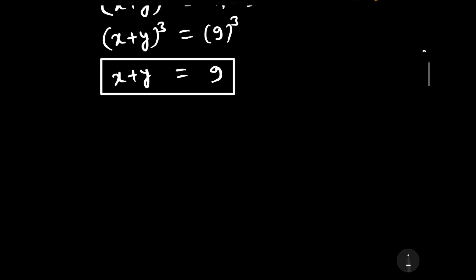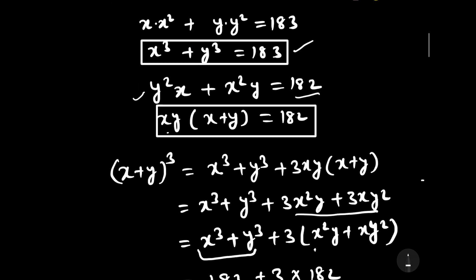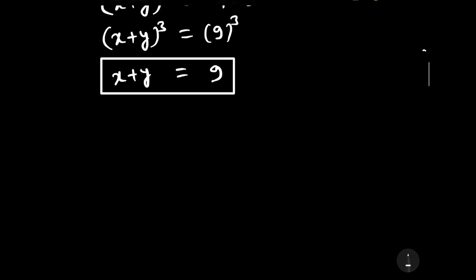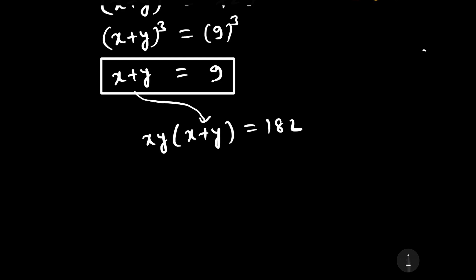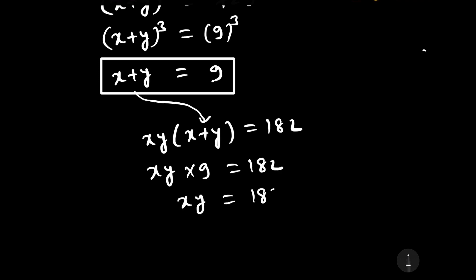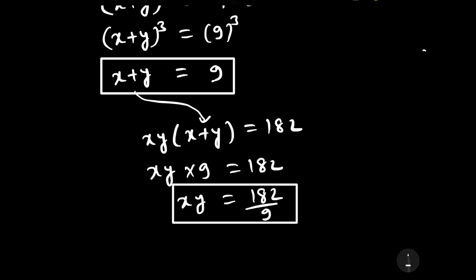From the second transformed equation, xy(x + y) equals 182. We now substitute x + y equals 9, giving xy times 9 equals 182. Therefore xy equals 182/9.